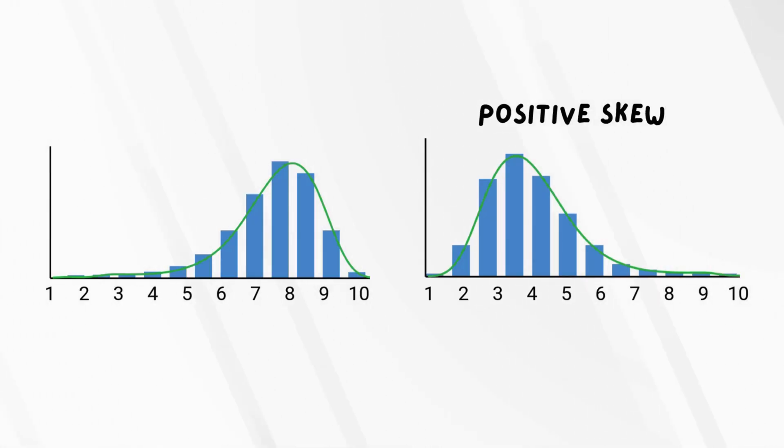In a positively skewed distribution, most scores are low, and the tail stretches to the right. Think of test scores where most people bombed, but a few aced it. In a negatively skewed distribution, most scores are high, and the tail stretches to the left. Like when almost everyone crushed the quiz, except for that one person who forgot it was happening. Looking at you, Julia.